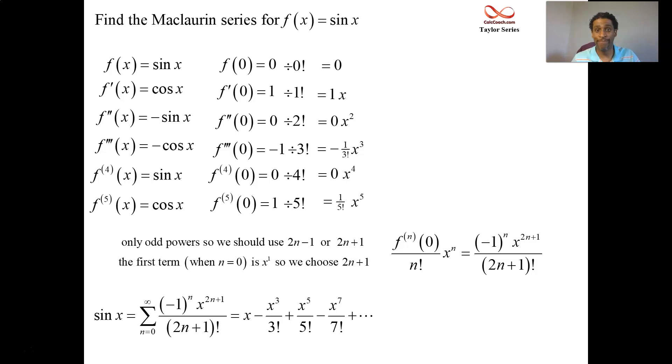Interval of convergence. Well, a sub n plus one divided by a sub n, be very careful here. There's a lot of places to make a mistake. When you replace n by n plus one, you're getting two n plus three for these guys. So two n plus two and then plus a one. So you'll have x to the two n plus three and you'll have a two n plus three factorial.